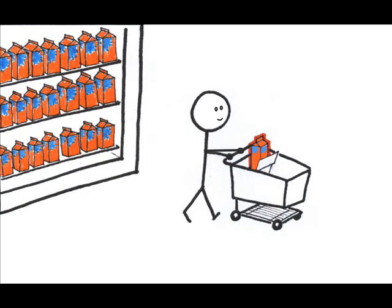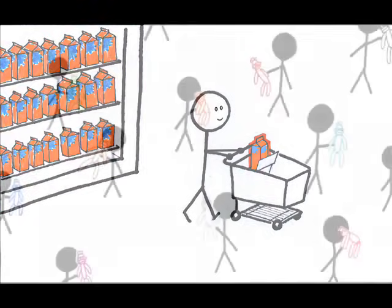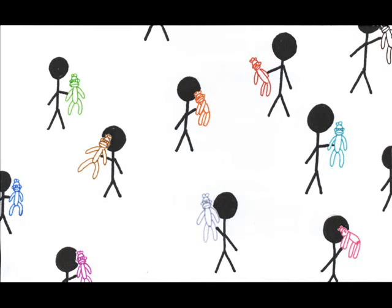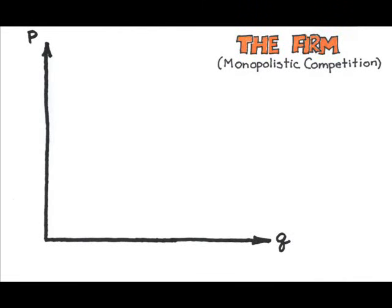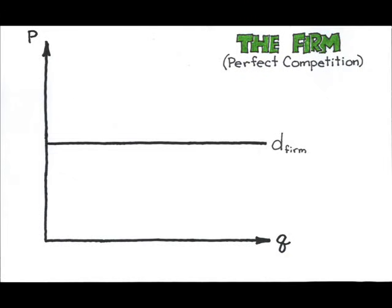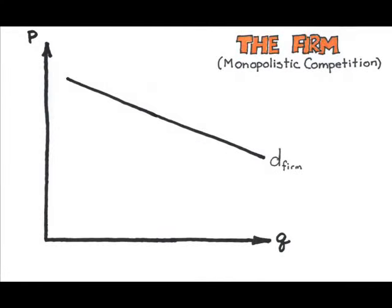So in monopolistic competition, there are lots of competitors with highly substitutable products that have slight differences, and there's free entry and exit. The demand facing each producer will be a small fraction of the overall market demand, and the demand will be highly, but not perfectly, elastic. Whereas the perfectly competitive firm's demand was horizontal — showing no control over price — the monopolistically competitive firm's demand will be downward sloping, if fairly flat, showing that the firm has a small amount of control over its price.